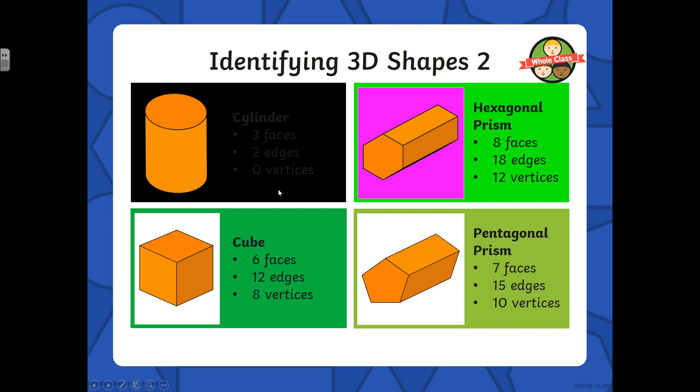Cylinder: 3 faces, 2 edges, 0 vertices. Hexagonal prism, because it's got a hexagonal face: 8 faces, 18 edges, 12 vertices. Cube, same again.